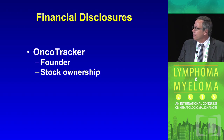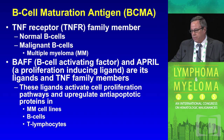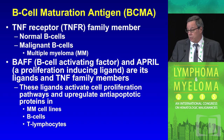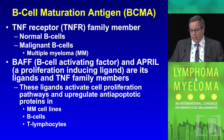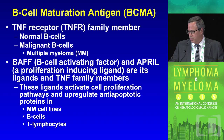B cell maturation antigen (BCMA) — probably something you may not have heard of — is a TNF receptor present on normal B cells and malignant B cells, including multiple myeloma. It has a number of ligands that bind to it, including BAFF and APRIL, and these ligands have been shown to activate cell growth and upregulate anti-apoptotic proteins and factors in myeloma cell lines, normal B cells, normal T cells, and other B cell malignant lines as well.